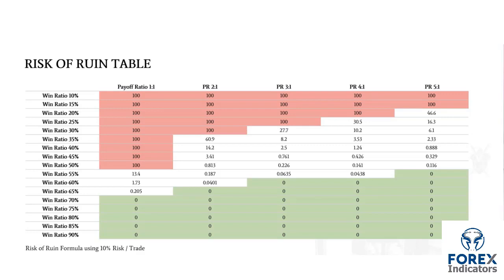The risk of ruin table is something I'd suggest taking a screenshot of — it has a lot of information. The win ratio, or accuracy, runs in 5% increments from 10% to 90%. The payoff ratio refers to how much you're gaining on average per trade when you win: one to one means risking $1,000 to gain $1,000; two to one means gaining $2,000 for every $1,000 risked, and so on up to five to one. Inside the boxes is the percent chance you blow up your account.